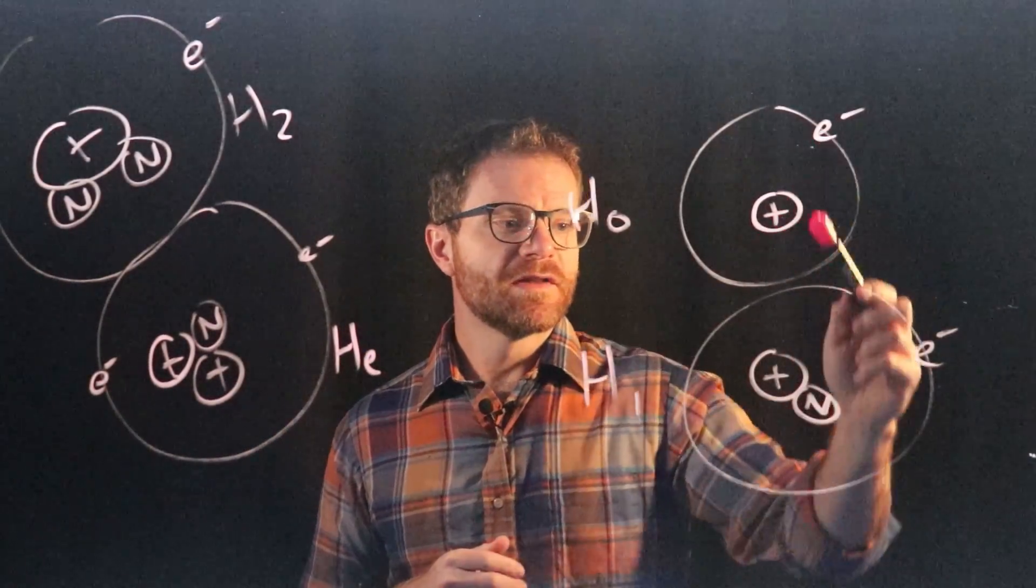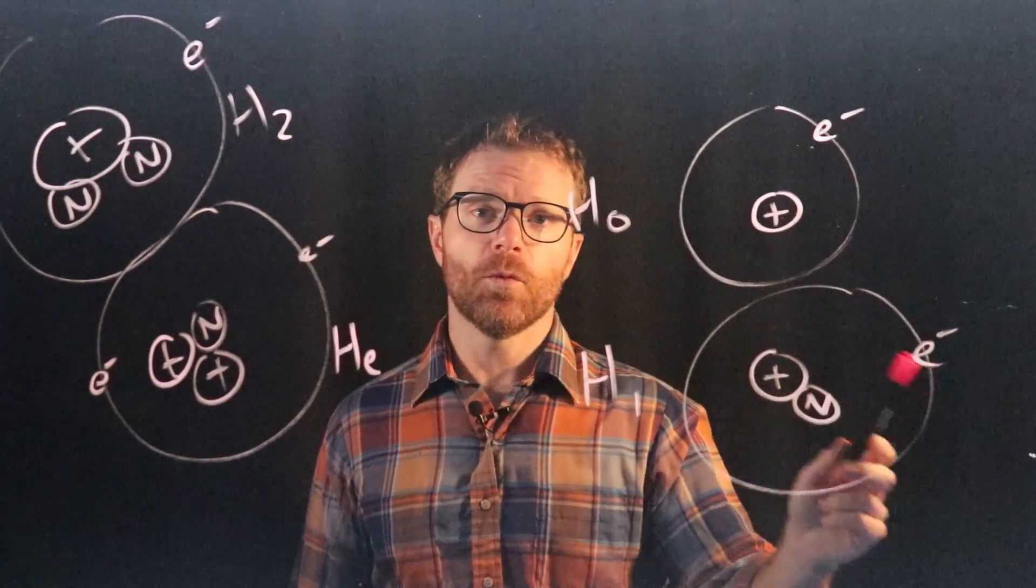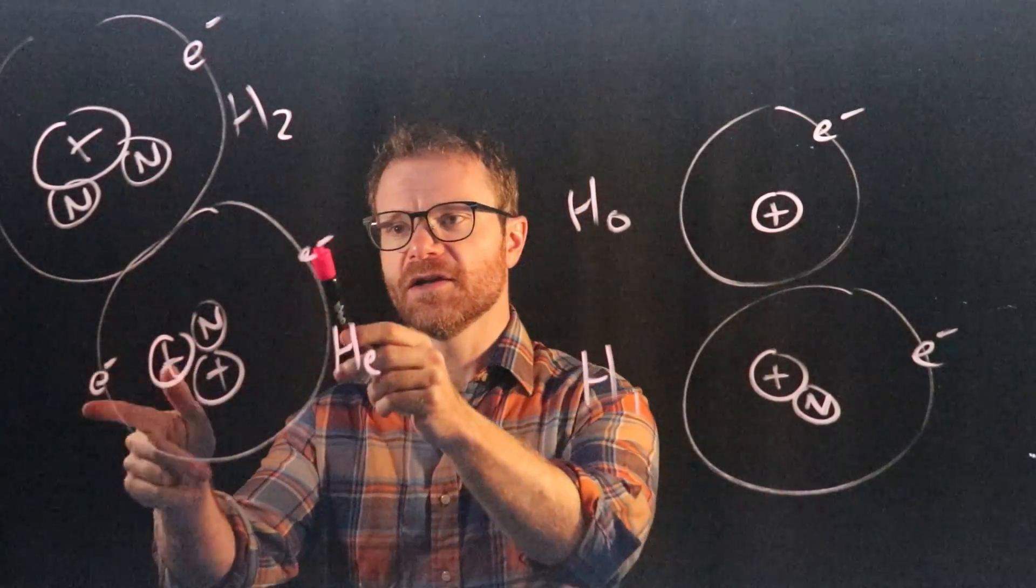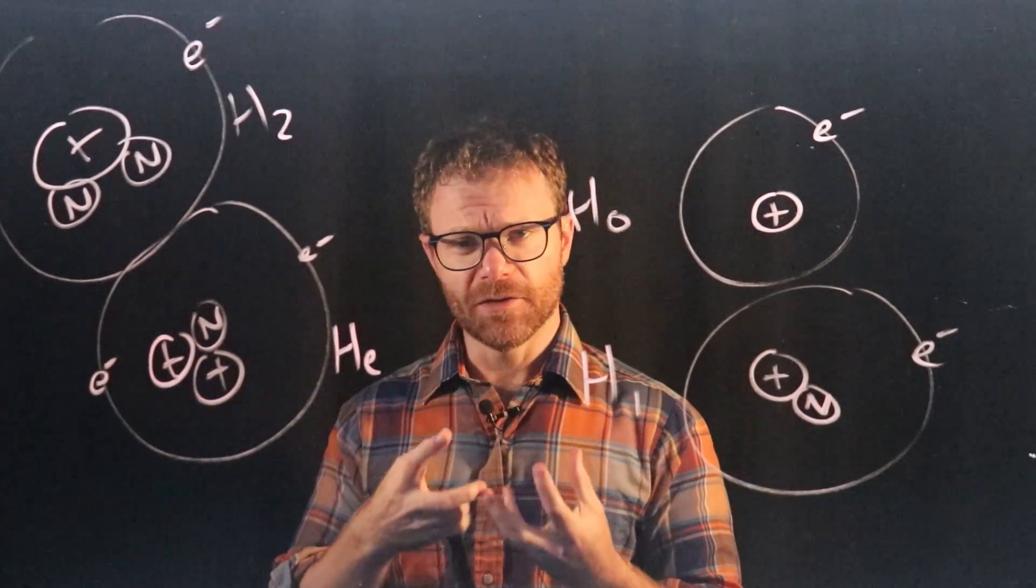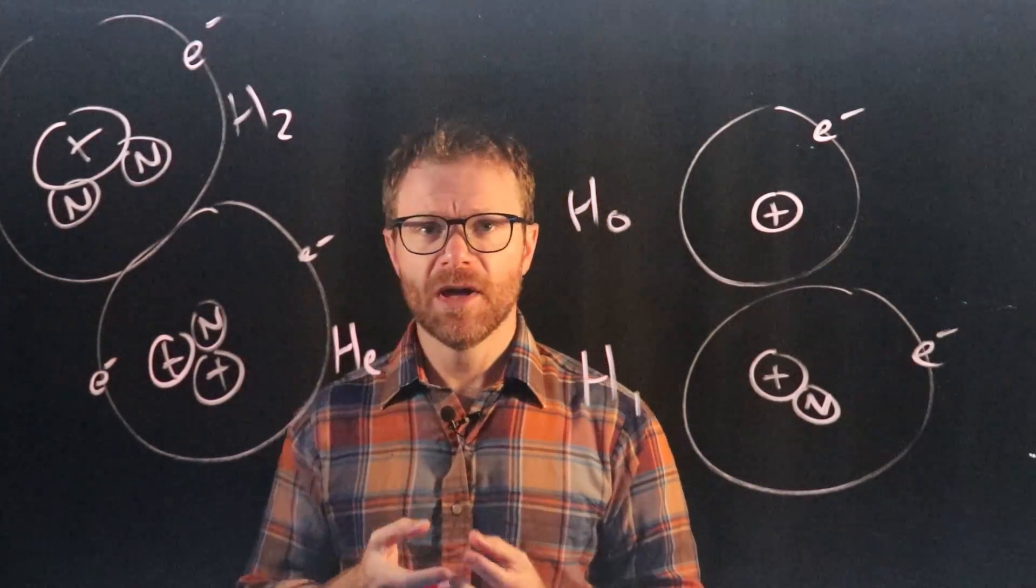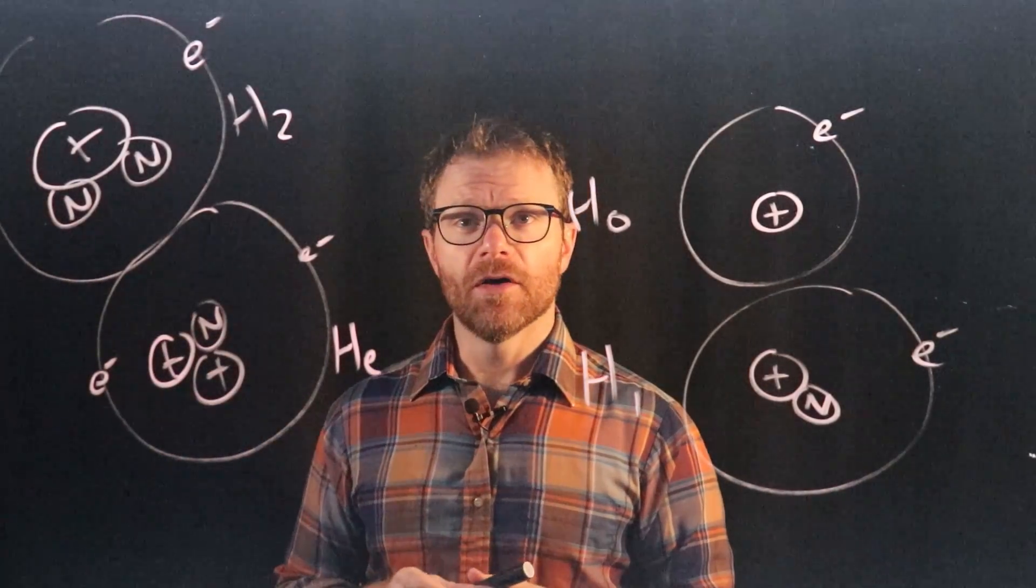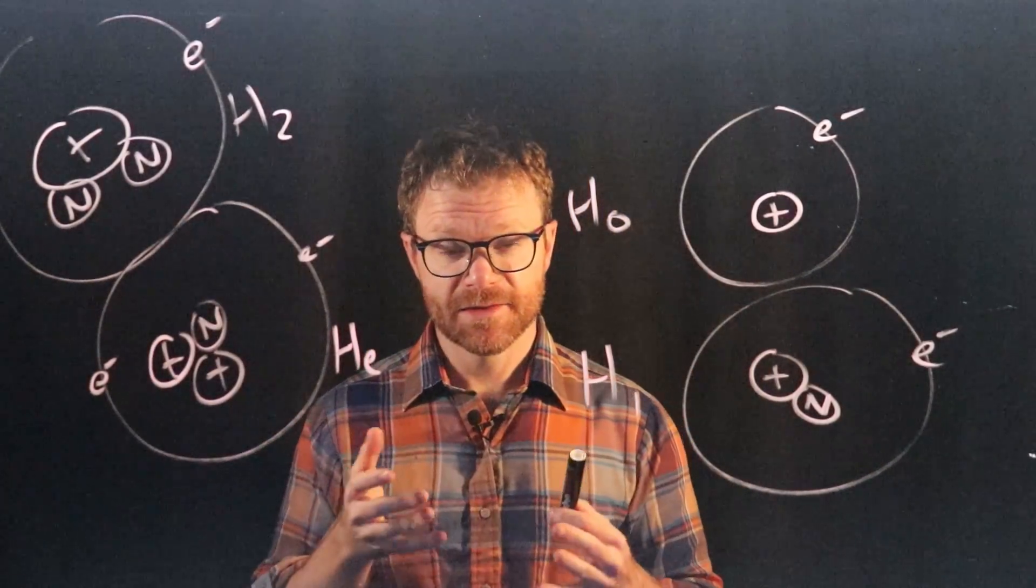And I guess here we're kind of seeing an important relationship as well. The number of protons and electrons are always the same. So hydrogen has one proton, therefore it has one electron. Helium has two protons, therefore it has two electrons. The number of neutrons aren't really involved. They just have to do with the overall mass of the atom. But usually the number of neutrons is equal to the number of protons, but not always. We see lots of examples here where that's not the case.